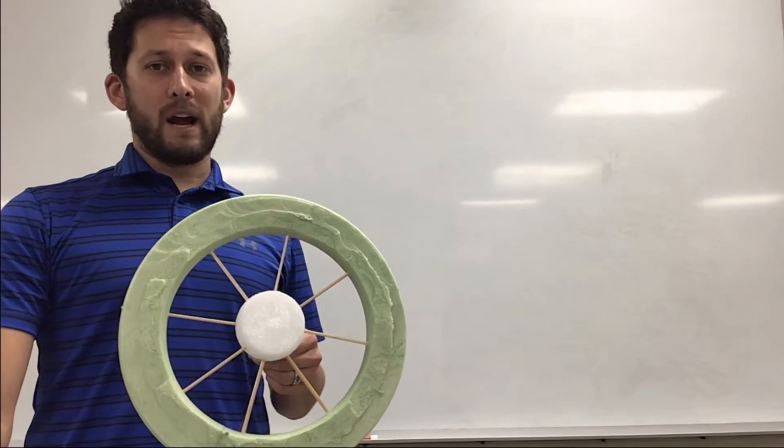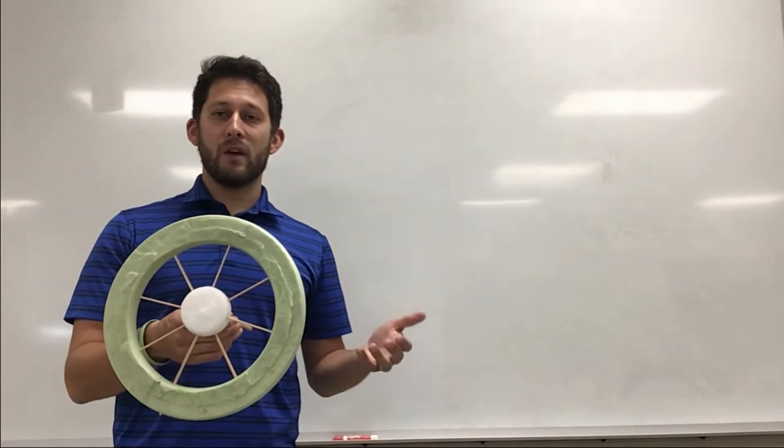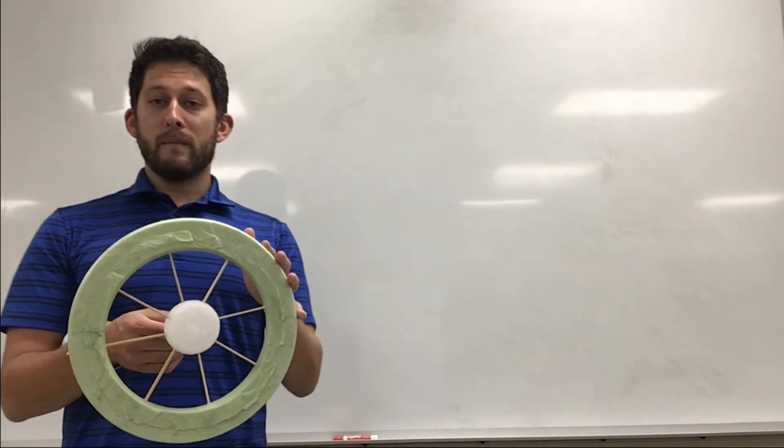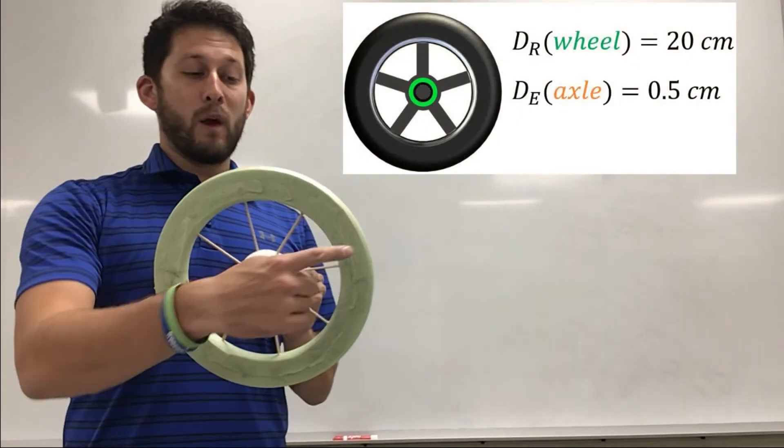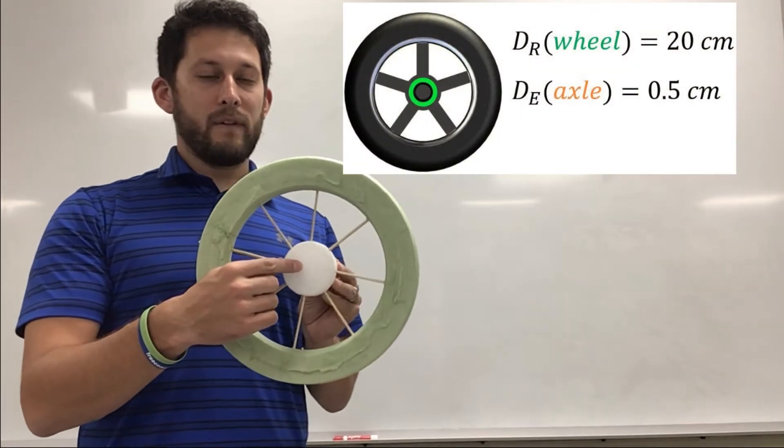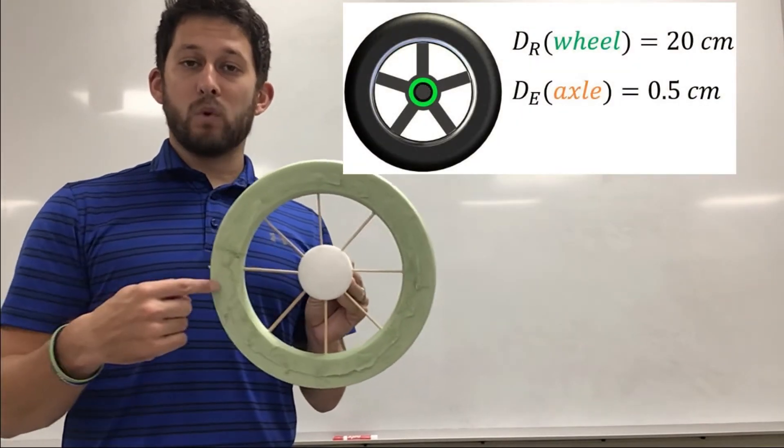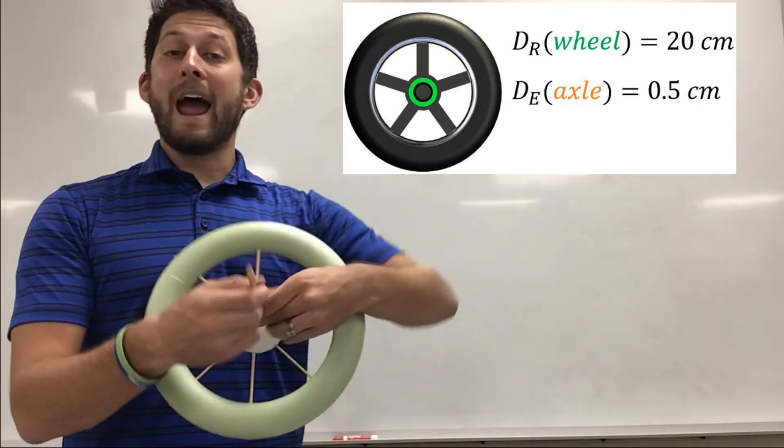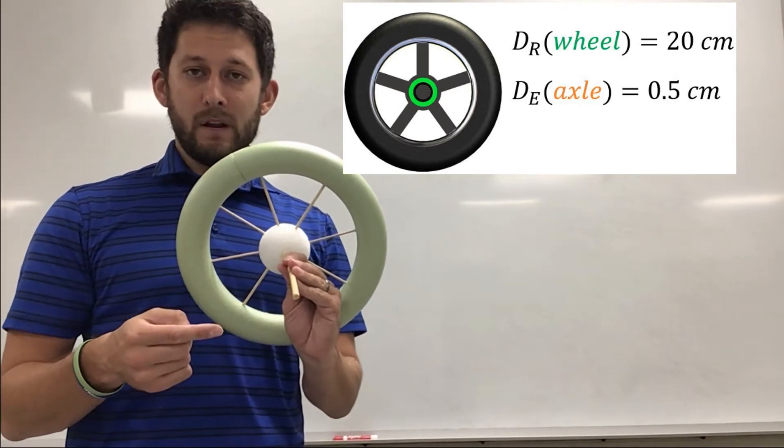So let's do a quick calculation to see exactly how this works. So I've already measured my wheel and axle and I found my wheel to have a radius of 20 centimeters and I found my axle to have a radius of 0.5 centimeters.